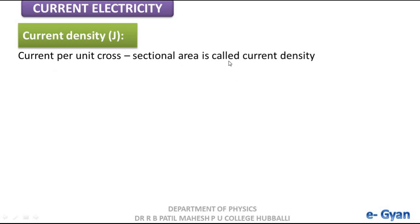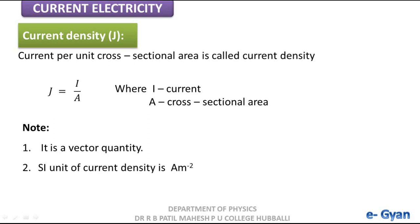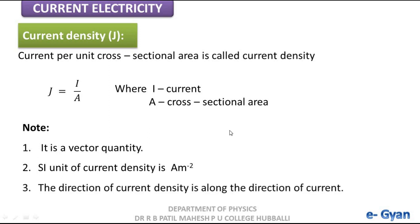Next, current density, symbolically represented by j. It is a characteristic of electric current. Current density is defined as current per unit cross-sectional area: j = I / A, where I is current and A is cross-sectional area. It is a vector quantity — it has both magnitude and direction. Its SI unit is ampere per meter squared. The direction of current density is along the direction of current.